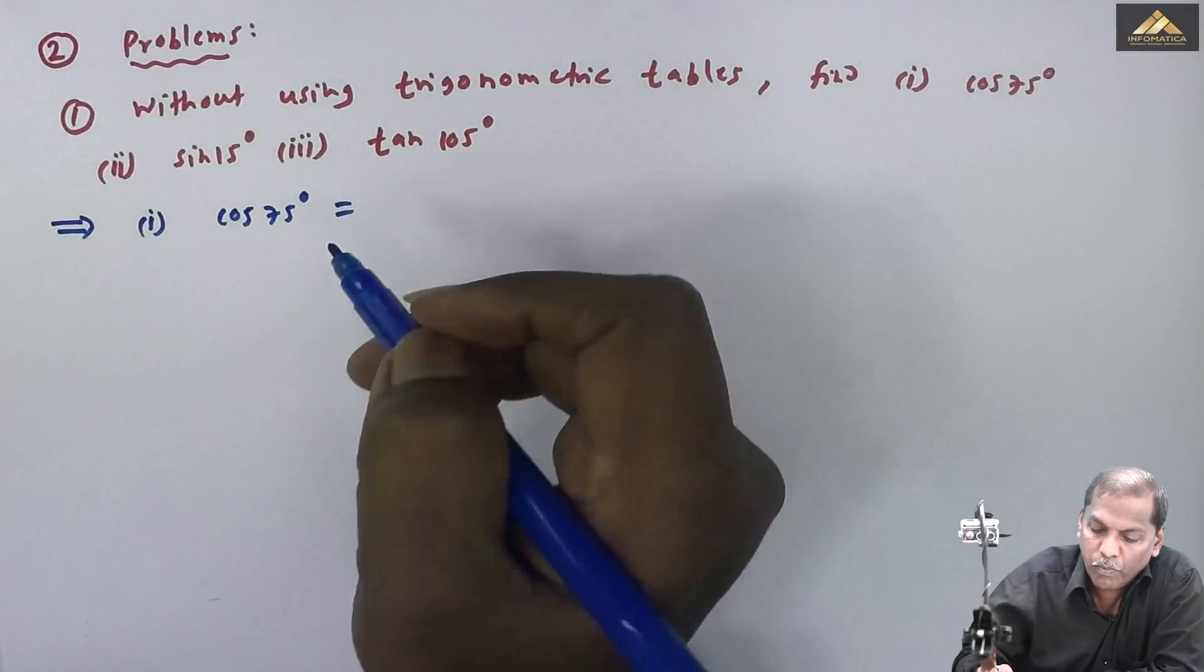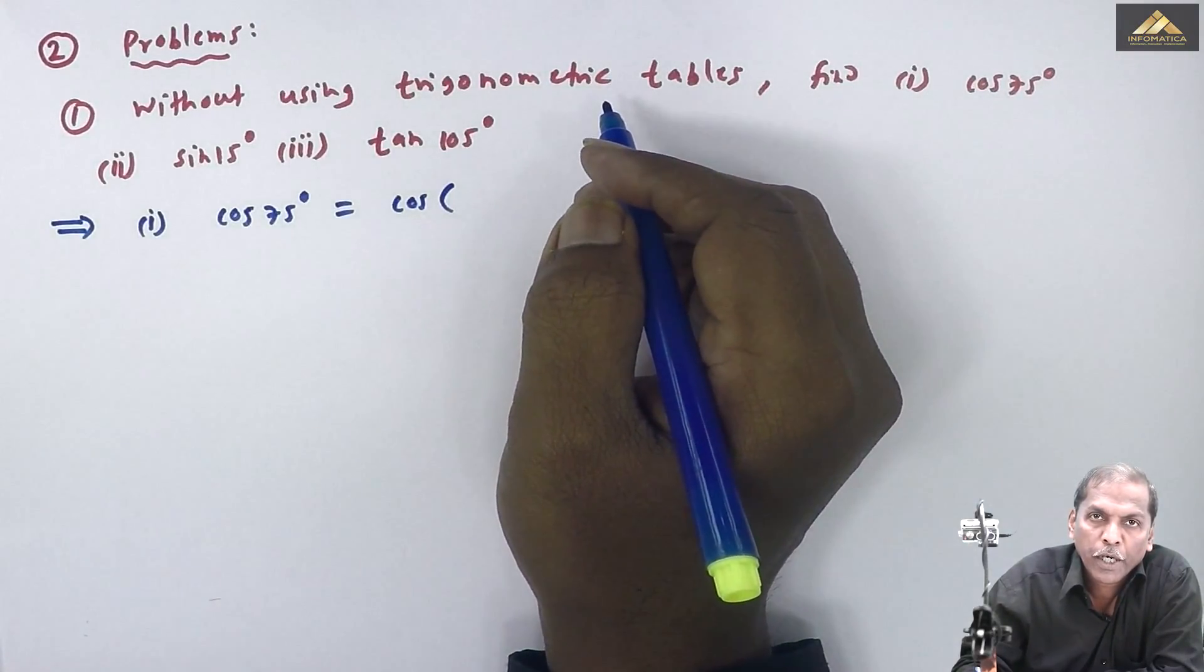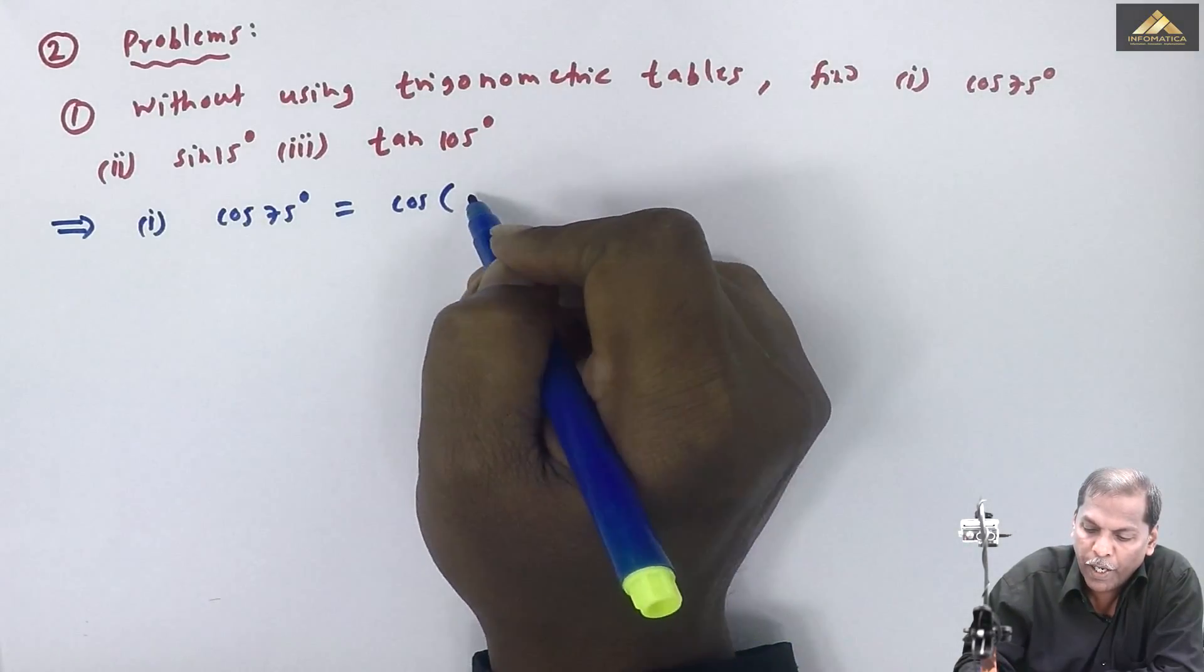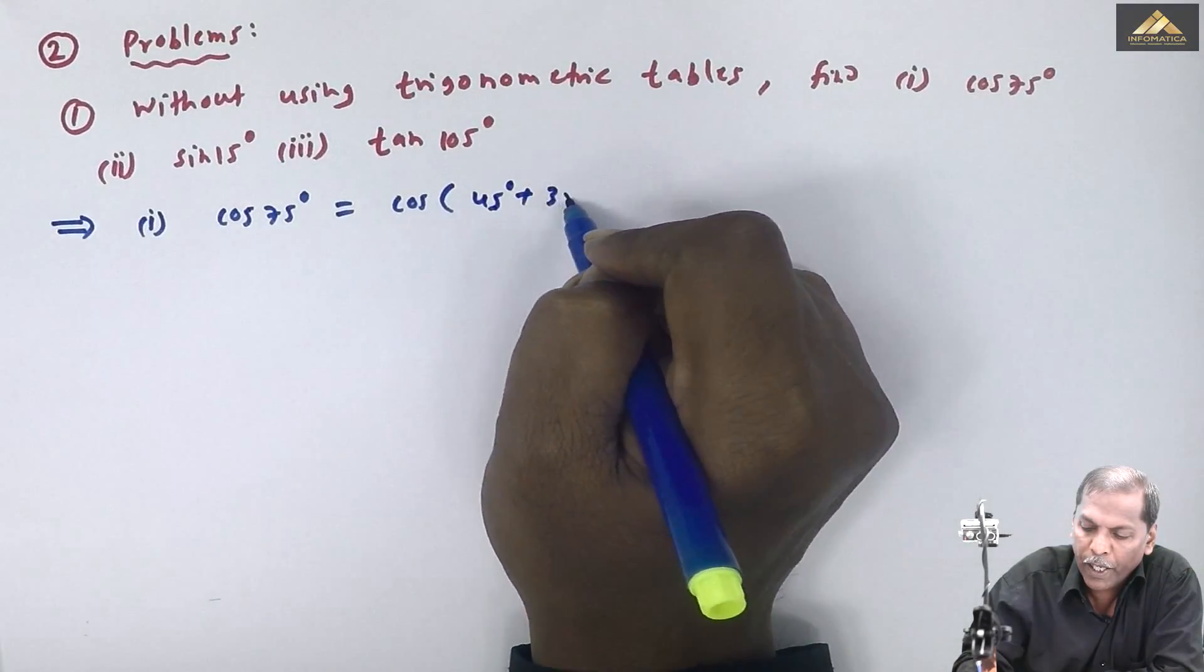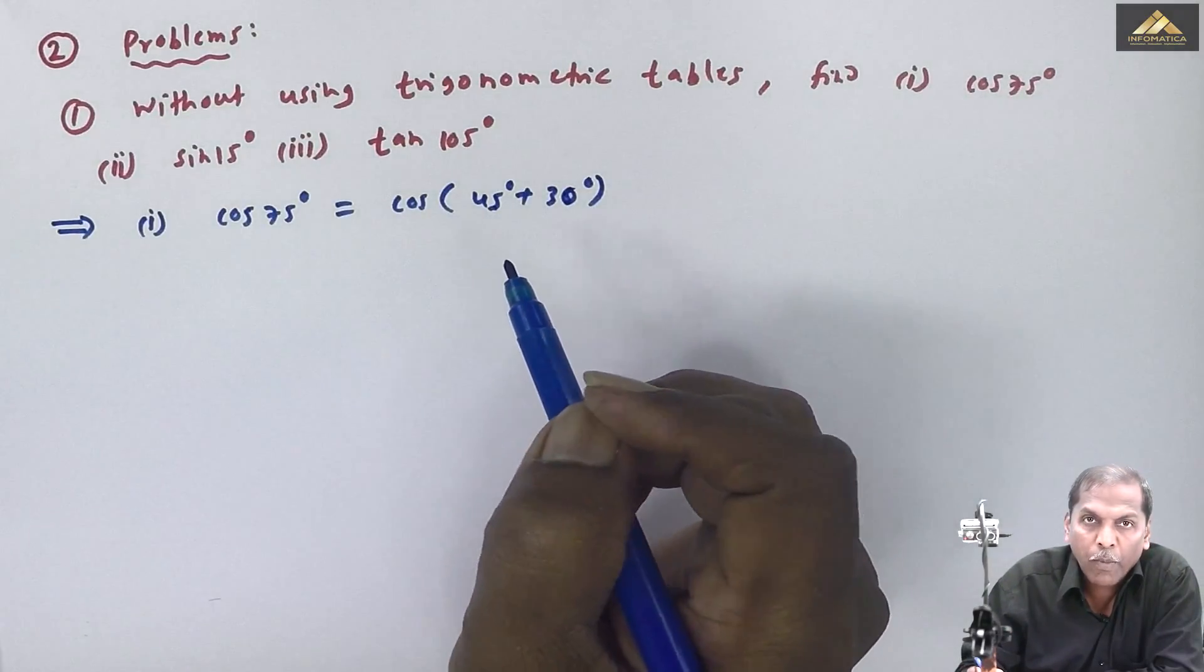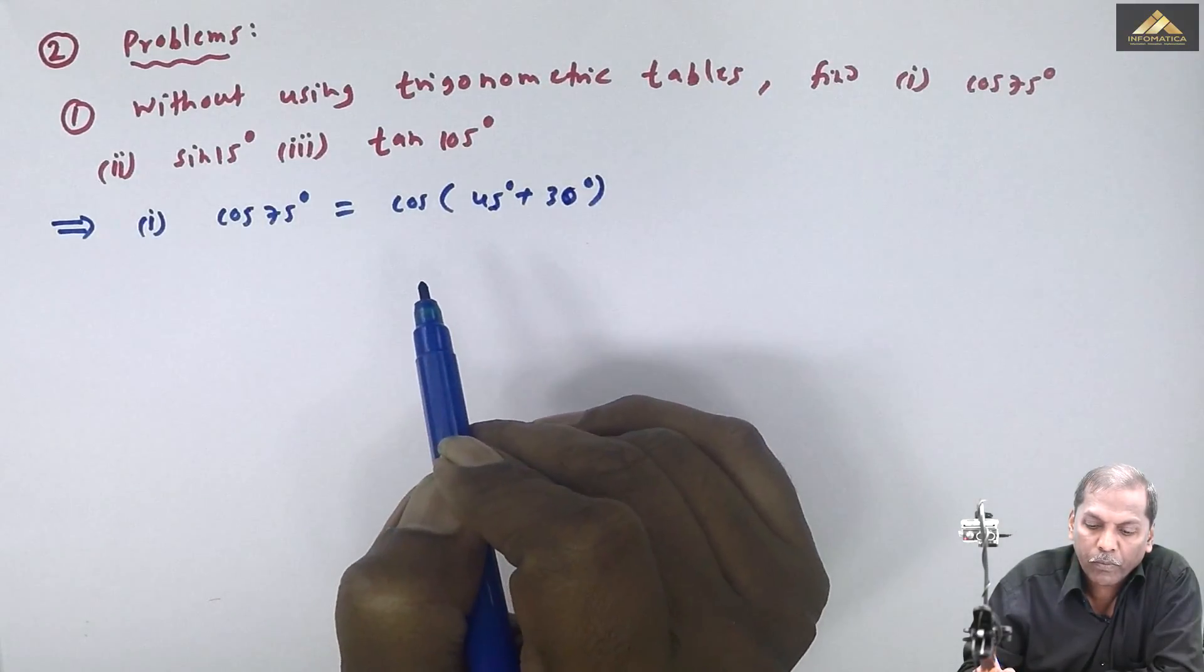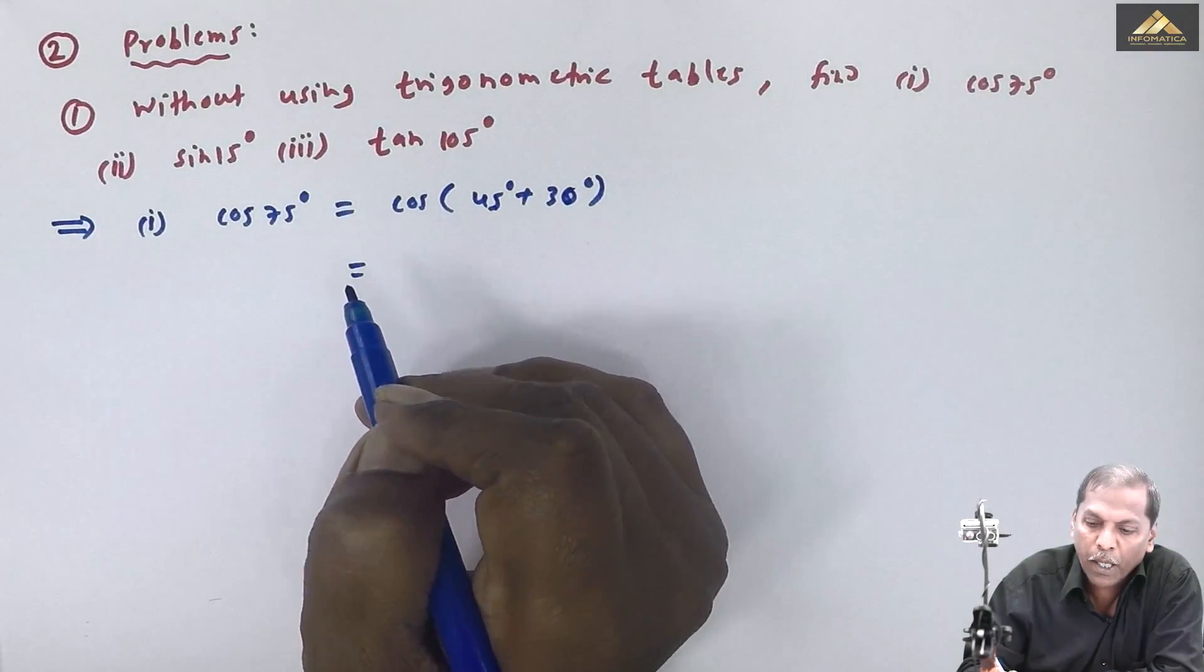Now here we have a bracket to observe. So our formula is cos of (a plus b). That is cos a cos b minus sin a sin b.